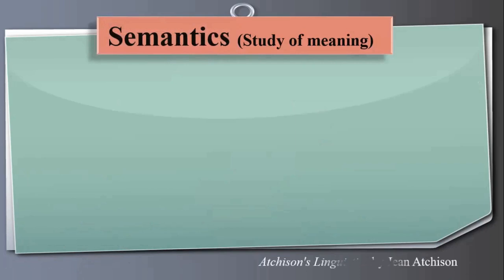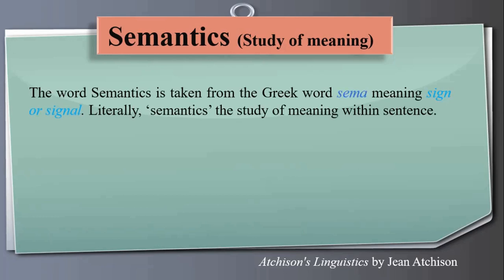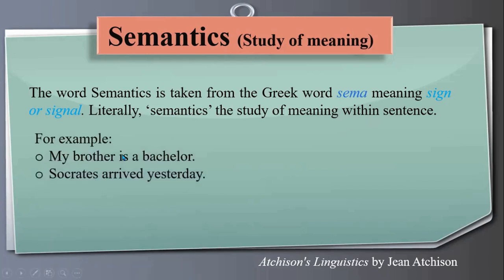Semantics is the study of meaning. This material is taken from Aitchison's Linguistics by Jean Aitchison. The word semantics comes from the Greek word 'sema' meaning sign or signal — literally, the study of meaning within a sentence. For example, 'My brother is a bachelor' and 'Socrates arrived yesterday' are semantically correct, but 'My brother is a Spencer' or 'Socrates arrived tomorrow' are semantically wrong.